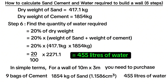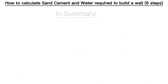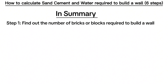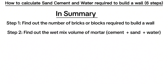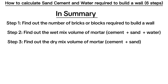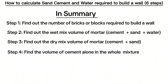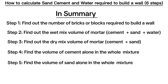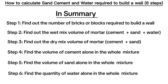Take note that the above calculation only covers the exact numbers. You will need to add 10 to 15% allowance for breakages or wastage. In summary, when finding out the quantity of building materials required to build a masonry wall — either brickwork or blockwork — the first step is to find the number of bricks or blocks. The second step is to find the wet mix volume of mortar. The third step is to find the dry volume of mortar. The fourth step is to find the volume of cement alone. The fifth step is to find the volume of sand alone. The sixth step is to find the quantity of water. That's all about finding out the quantity of materials — bricks, cement, sand, and water.